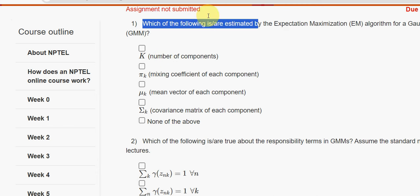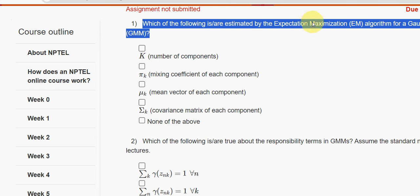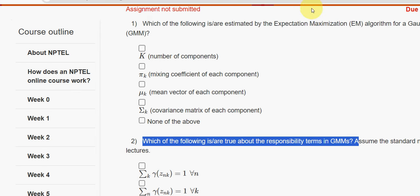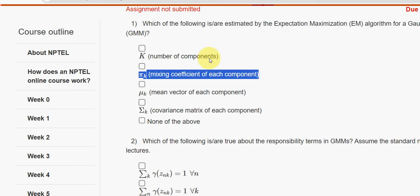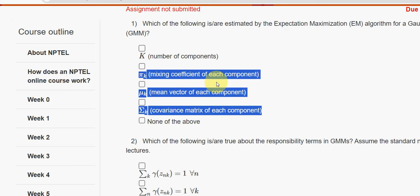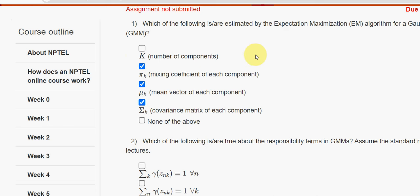Let's see the first question: which of the following is estimated by the Expectation Maximization algorithm for a Gaussian Mixture Model (GMM)? Do watch the full video and don't skip. If you are new to our channel, please subscribe, like this video, and share it with your friends and classmates. For the first question, the correct answers are the second, third, and fourth options.